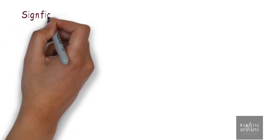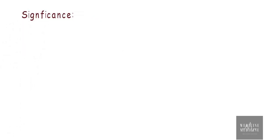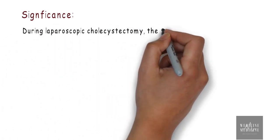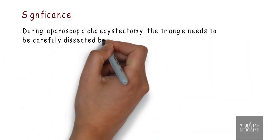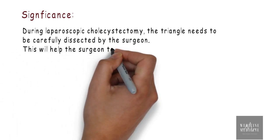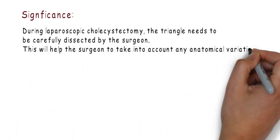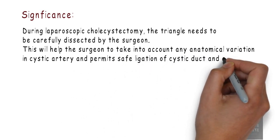Now, we shall discuss the significance of Calot's triangle. During laparoscopic cholecystectomy, the triangle needs to be carefully dissected by the surgeon. This will help the surgeon to take into account any anatomical variation in cystic artery and would also permit safe ligation of cystic duct and artery.